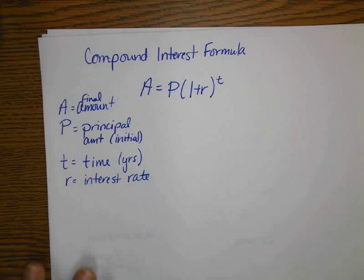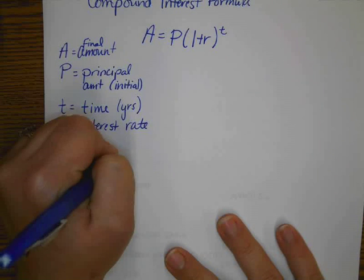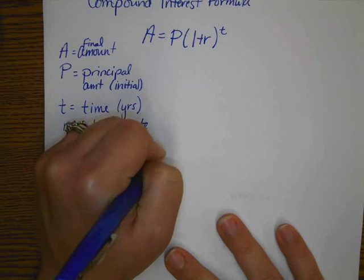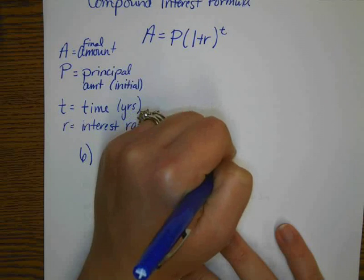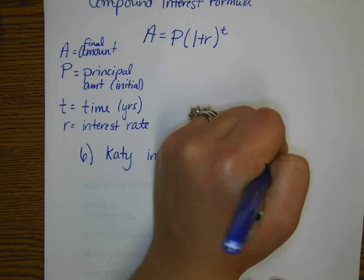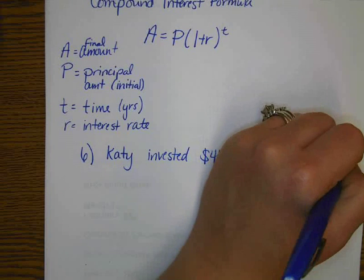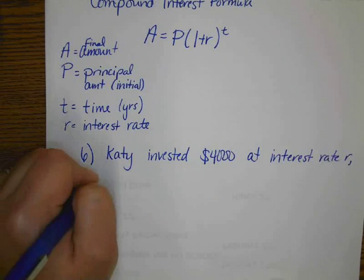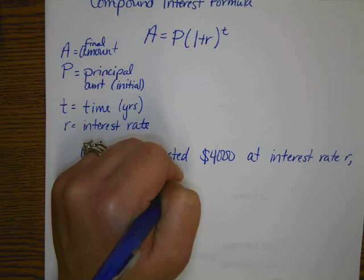So, the problem that we're going to do is Katie invested $4,000 at interest rate r. And it was compounded annually.